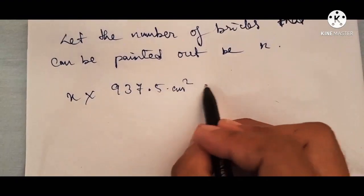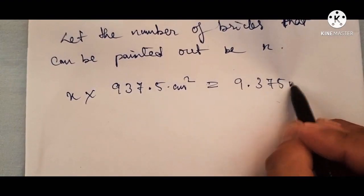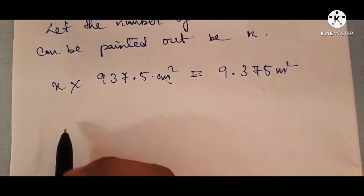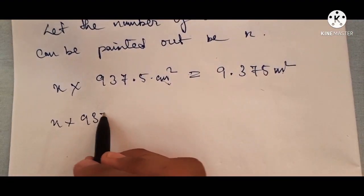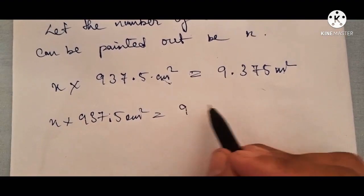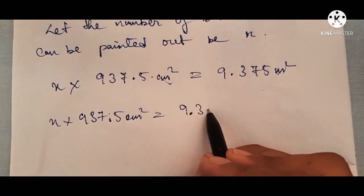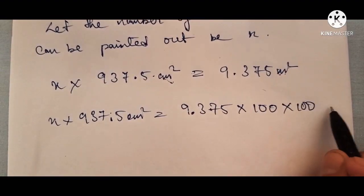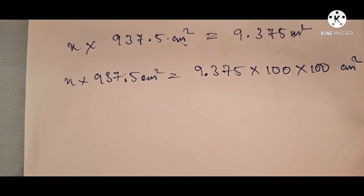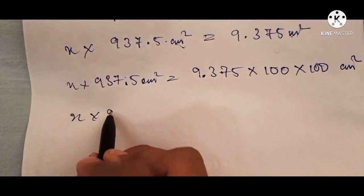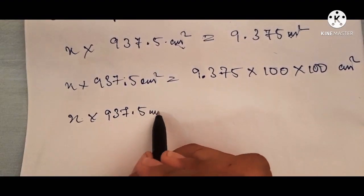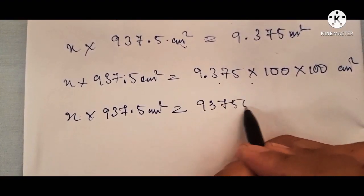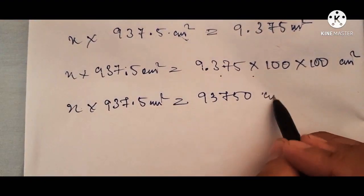We need to find the number of bricks x. Since 9.375 meter square needs to be converted to centimeter square, we multiply by 100 twice (since it is square), giving 9.375 × 10000 = 93,750 centimeter square. So x into 937.5 centimeter square equals 93,750 centimeter square.